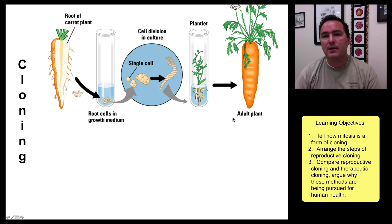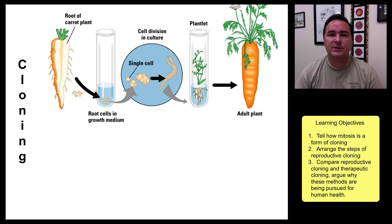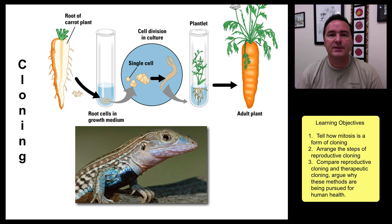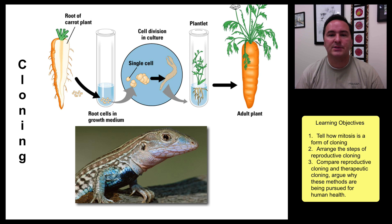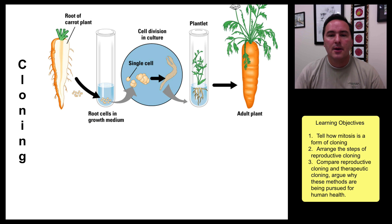Cloning happens naturally all of the time. There are many organisms who have just decided cloning is a better way to do this, even vertebrates. There are lizards that live in the Southwest that are all females, and the female just makes clones of herself. Her entire genome becomes the new genome in the new organism. There's no sexual reproduction, no meiosis going on. So there are lots of organisms that do this.